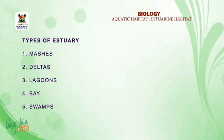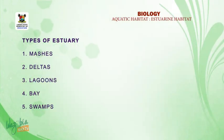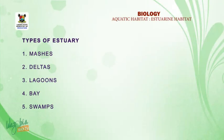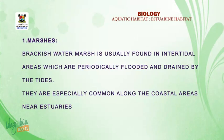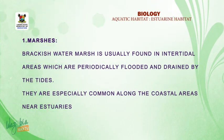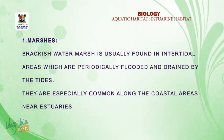There are five types of estuarine habitats: marshes, deltas, lagoons, bays, and swamps. Let's look at them one after the other. Marshes: a marsh is a brackish water area usually found in intertidal areas which are periodically flooded and drained by the tides. We shall continue from here after a break.